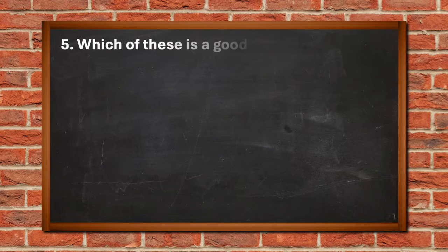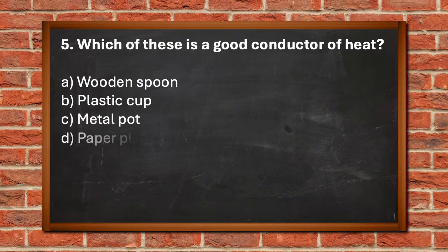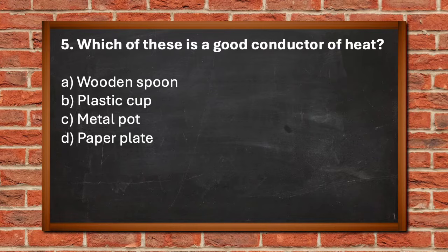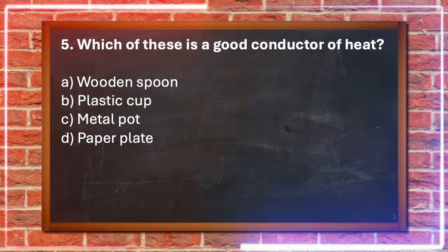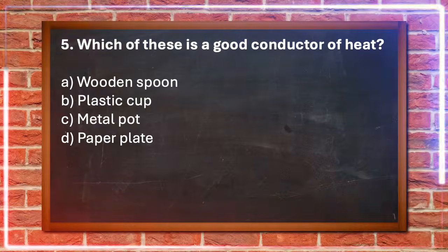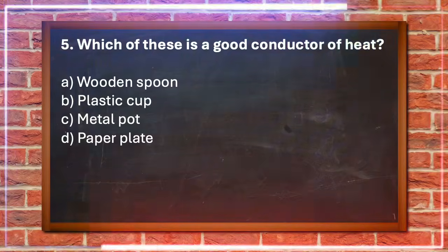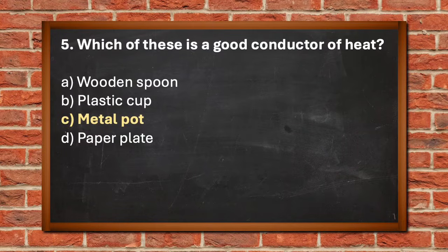Number 5. Which of these is a good conductor of heat? A. Wooden spoon, B. Plastic cup, C. Metal pot, D. Paper plate. The answer is C. Metal pot.